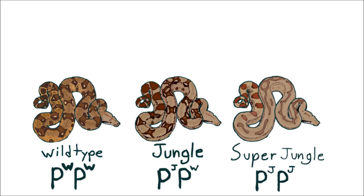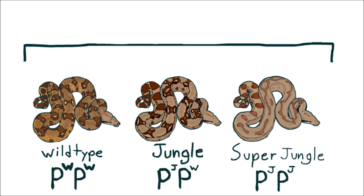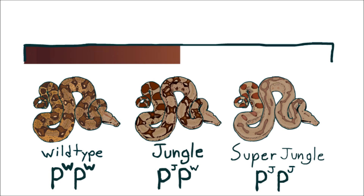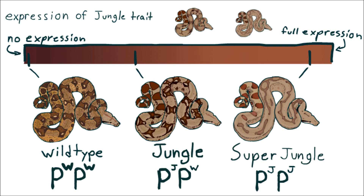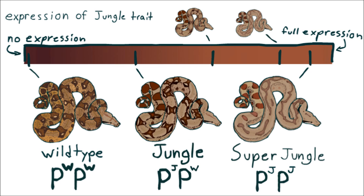What's cool about traits like this is you get a nice spectrum of expression, with wild type on one end and the supers on the other. A heterozygous individual's place on this spectrum can vary depending on how strong that particular line of the jungle morph is, because the expression of the jungle allele can be altered over time by selective breeding.